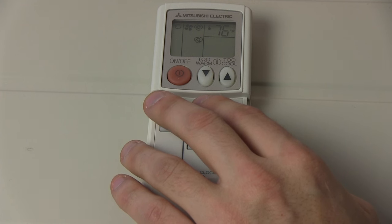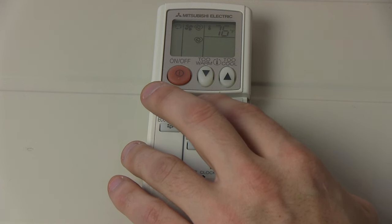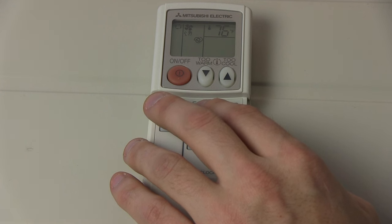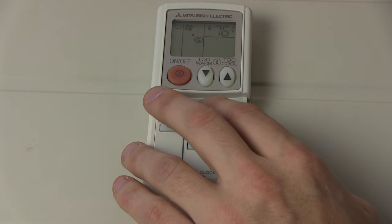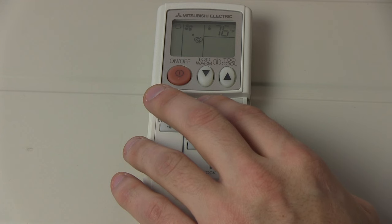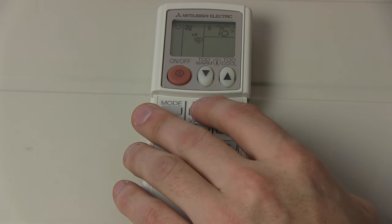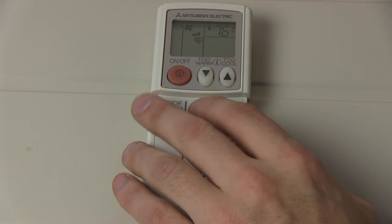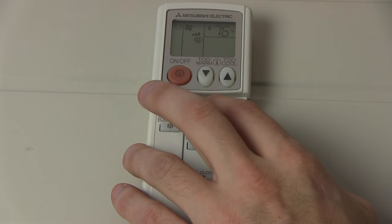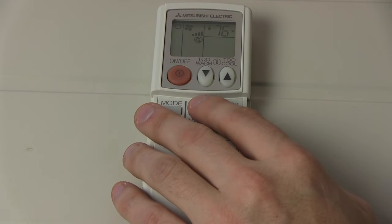But we can simply change the fan speed. We hit it once, we put it into a mode that's referred to as quiet mode. We hit it again, this is going to be on the lowest fan speed. Hit it one more time, this is on medium. Again, high speed. And lastly, super high.